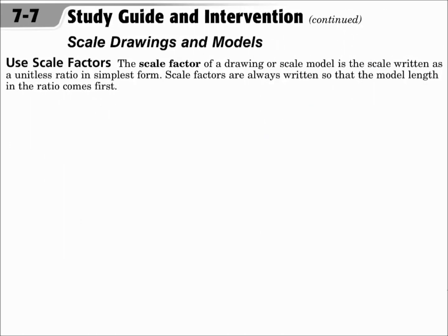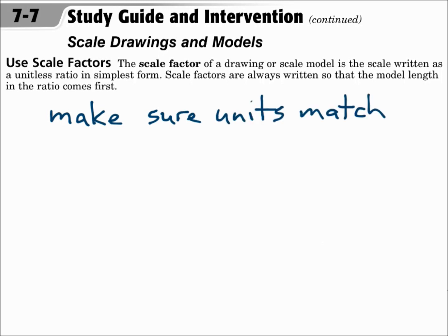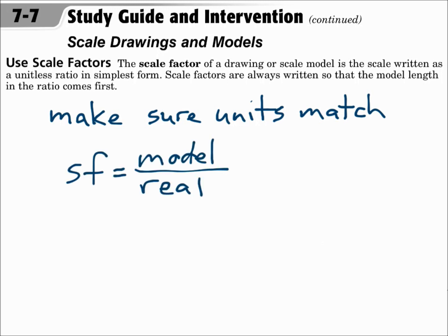Use scale factors. The scale factor of a drawing or scale model is the scale written as a unitless ratio in simplest form. Scale factors are always written so that the model length in the ratio comes first — model length over actual length. Make sure that the units match. If the model is measured in inches and the actual piece is measured in feet, you need to use conversion factors to get the units to match before you calculate the scale factor. Remember that the scale factor equals the model length over the real length.